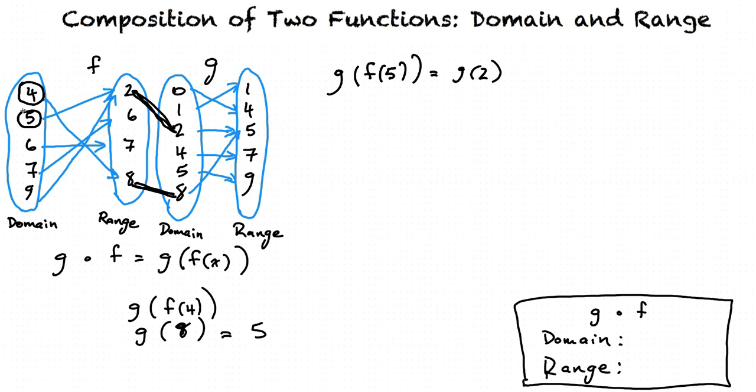Now in our quick example that I explained, we said that 6 was not part of our final domain. We can see this if we try again here. g of f of 6 equals 7, so we need g of 7. 7 is not in the domain of g, so we're stuck here. 6 is not in our final domain.